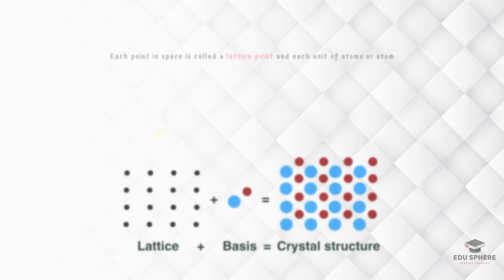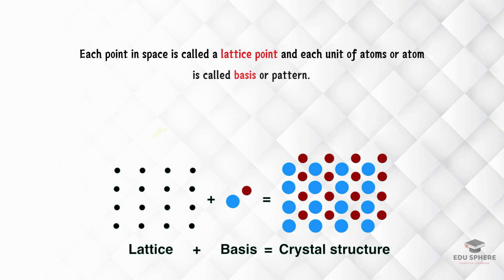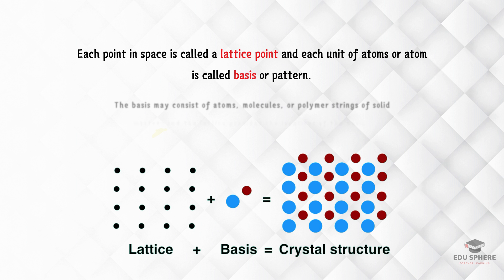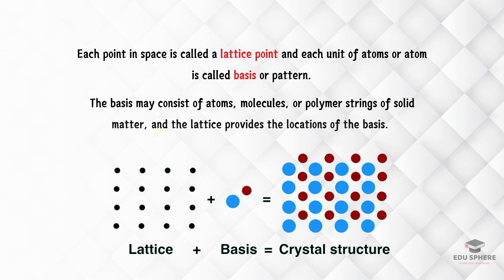We have already discussed that each atom, molecule, or ion in a crystal lattice is represented by a single point. These points are called lattice sites or lattice points. Lattice sites are joined together by straight lines in a crystal lattice. As you can see here, these are the lattice points.